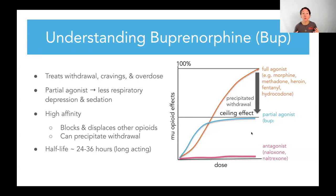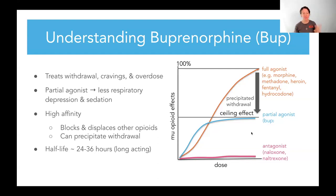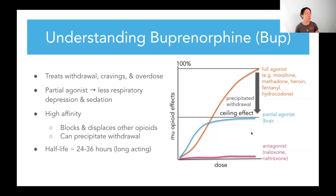Buprenorphine also has a super high affinity for the mu opioid receptor — higher than methadone, higher than naloxone, higher than fentanyl. That means if you have buprenorphine in your system and you were to use illicit drugs, the bup is not going to let go. Those receptors occupied with buprenorphine are not going to get unseated. So it provides a level of airway protection — it helps patients not overdose from drugs, even if they relapse. Remember that relapsing is part of every single medical condition: people with diabetes eat high-sugar foods; people with high blood pressure eat salty chips. So we like bup because it helps protect people.